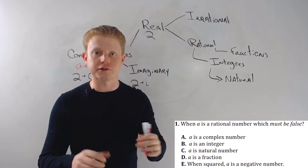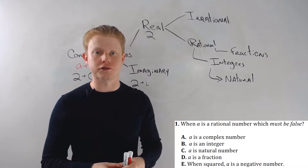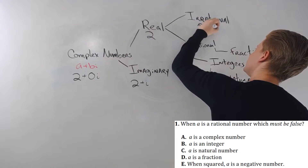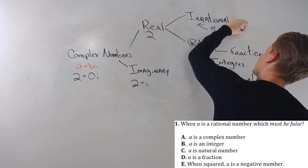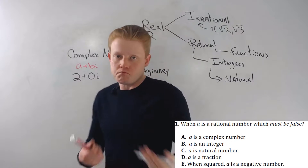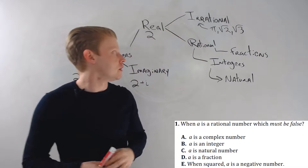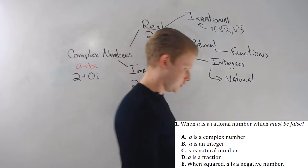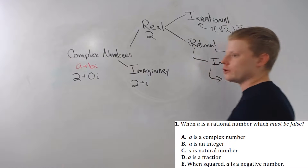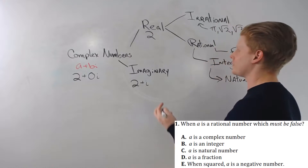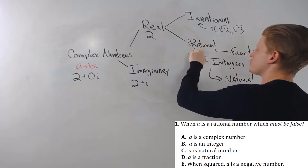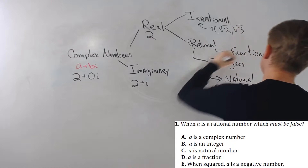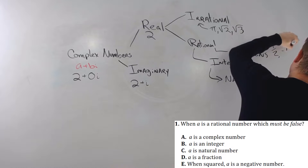Irrational numbers are numbers that cannot be expressed as a ratio or fraction of two integers. Things like pi, square root of 2, square root of 3, and so on. Rational numbers are the numbers we use most: 1, 2, negative 36, one-half, three-eighths, 0.0000007, and so on. Rational numbers are broken into fractional numbers — anything that's not an integer, like one-half or negative 111 over 73.